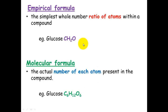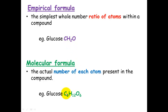So you can see here, if you divide all of these numbers by 6, the simplest whole number ratio is 1 carbon, 2 hydrogens, and 1 oxygen. Carbon divided by 6 is 1, hydrogen divided by 6 is 2, and oxygen divided by 6 is 1.